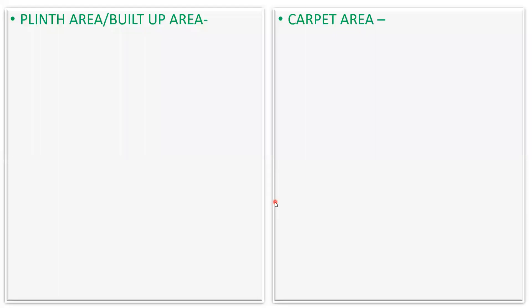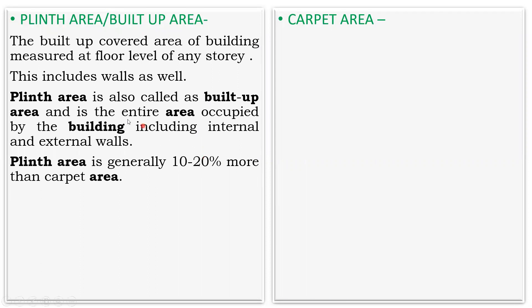In this lecture we will see what is plinth area or built-up area, and also what is carpet area. The built-up covered area of a building measured at the floor level of any story is called the plinth area. Plinth area is also called built-up area and is the entire area occupied by the building including the internal and external walls.